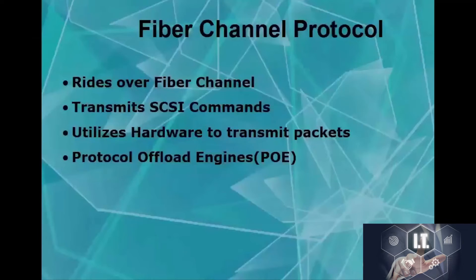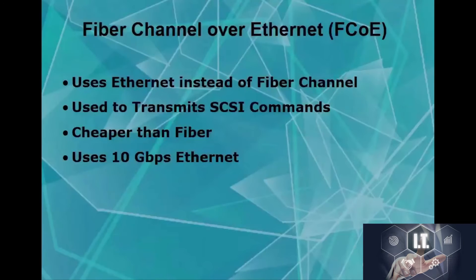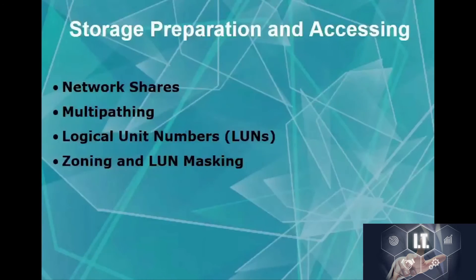Fiber Channel over Ethernet (FCoE) uses Ethernet instead of fiber channel but achieves fiber-like speeds. It also transmits SCSI commands and is cheaper than fiber. If there's an issue with fiber channel, you can use FCoE to avoid the cost while still sending information at speed via Ethernet. FCoE is capable of 10 Gigabit throughput.